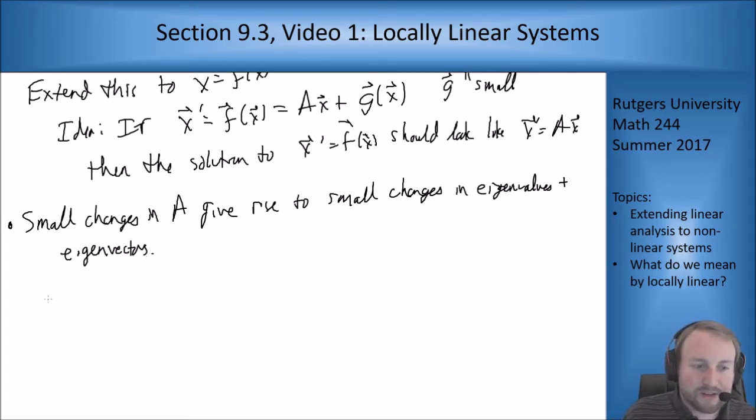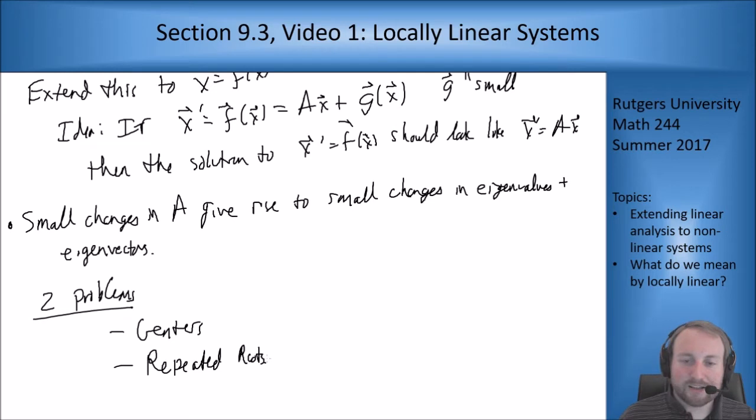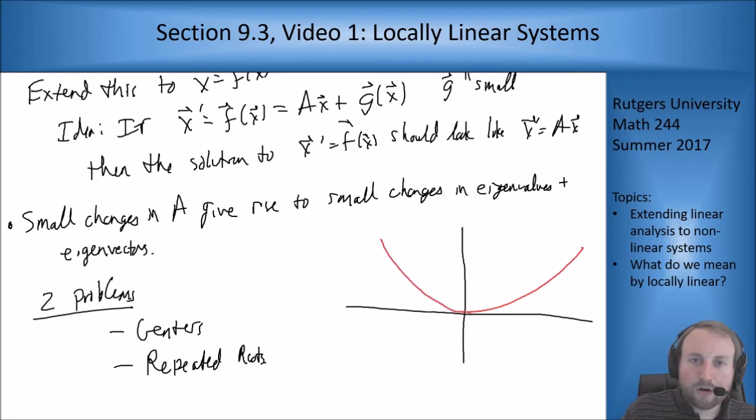Now there are two main problems with this and these are centers and repeated roots. Now why do these guys cause problems? Well one way to look at it is with our trace determinant plane idea. So if I draw my little plane here, here's my curve which is t squared over four. Where do I get centers? Well I only get centers along this line here. So if I have a point that is on this line that is a center and I nudge it to a nearby eigenvalue, then I'm going to be somewhere nearby this.